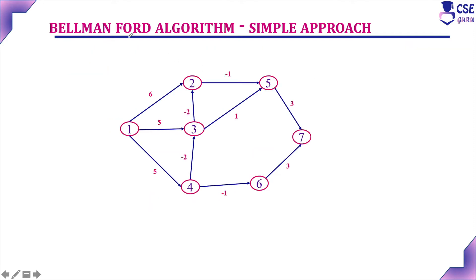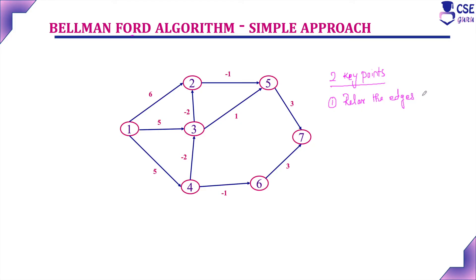Bellman-Ford algorithm is a single source shortest path problem. We consider one vertex as the source vertex, and from that source vertex to all other vertices in the given graph, we find the shortest path. To implement Bellman-Ford algorithm, two key points we need to know. One is relaxing the edges. We need to relax the edges n minus 1 times, where n is the number of vertices in the given graph.